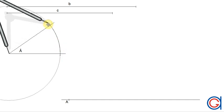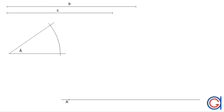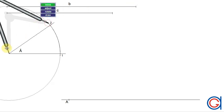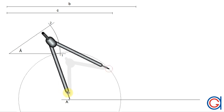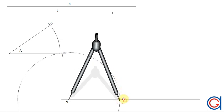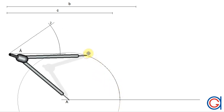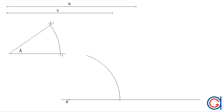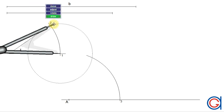The next step is we are going to transport the given angle A onto this horizontal line. To do this, with any radius we scribe an arc which cuts the two sides of our given angle at points one and two, as can be seen here. Now with the same radius, setting it on point A of our horizontal line, we scribe an arc until it cuts our horizontal line at a new point.